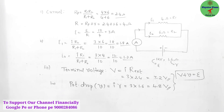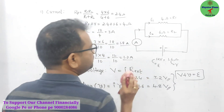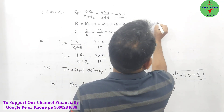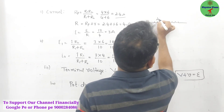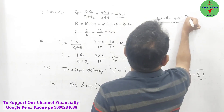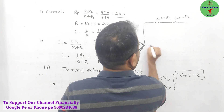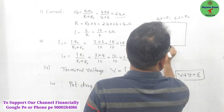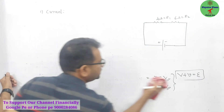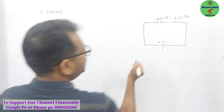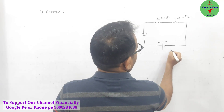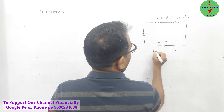Okay, same question with a little change — same resistors but now connected in series. So r1 = 4 ohm and r2 = 6 ohm. The battery has an internal resistance of 2 ohm and EMF = 12 volt.